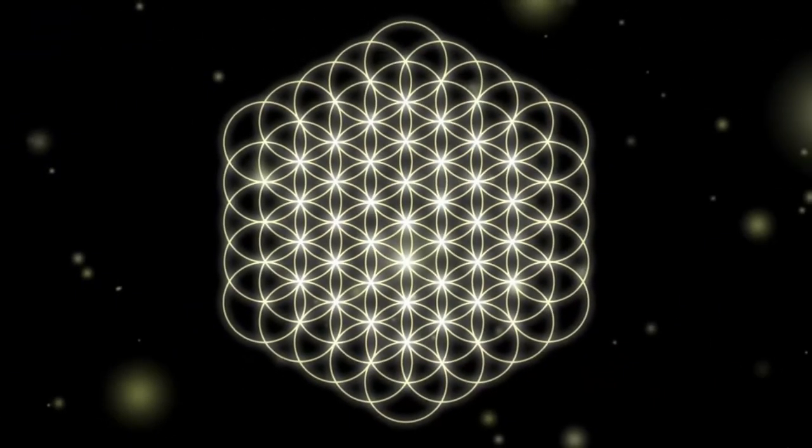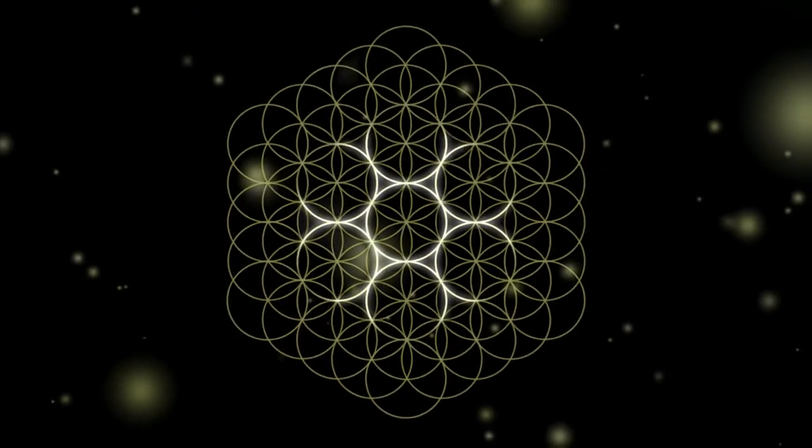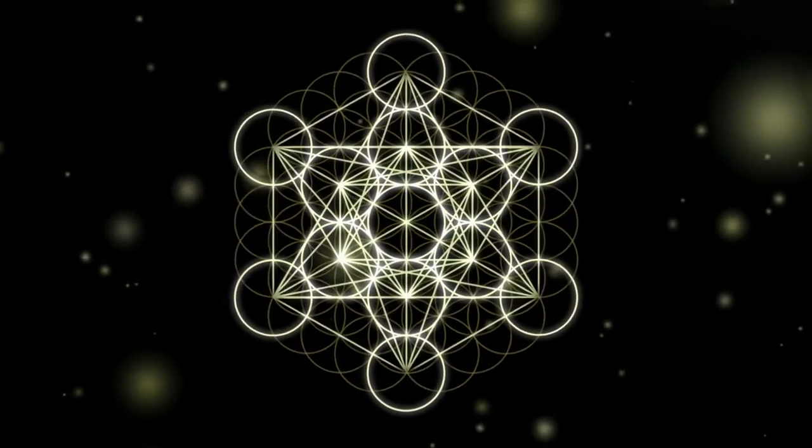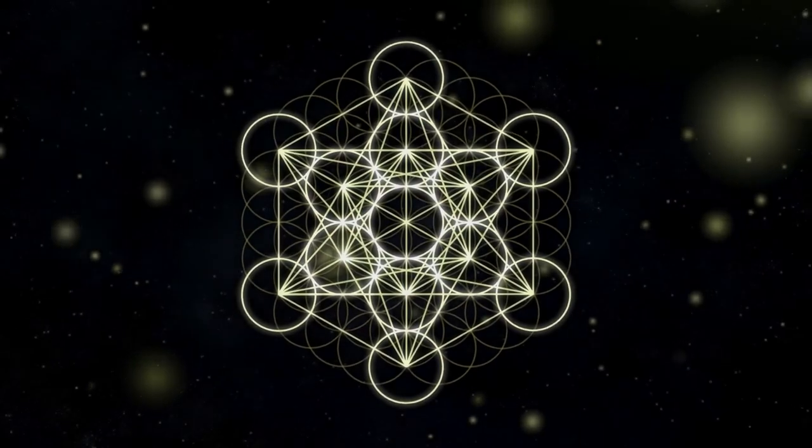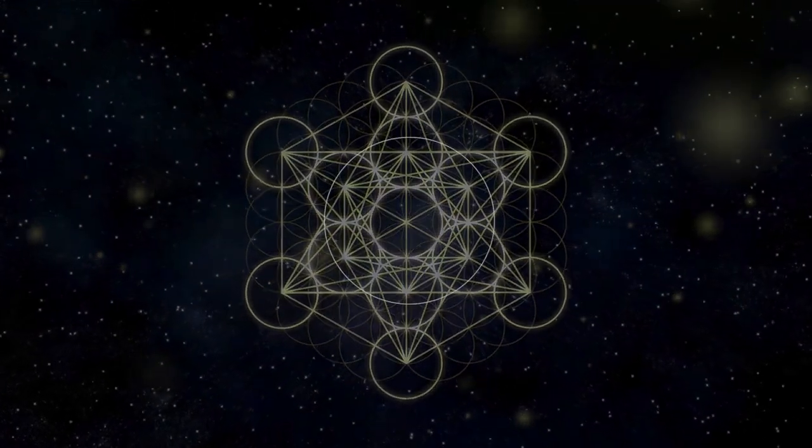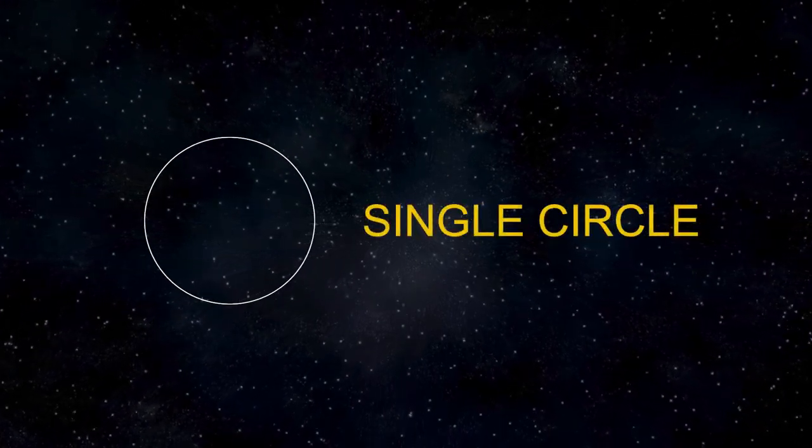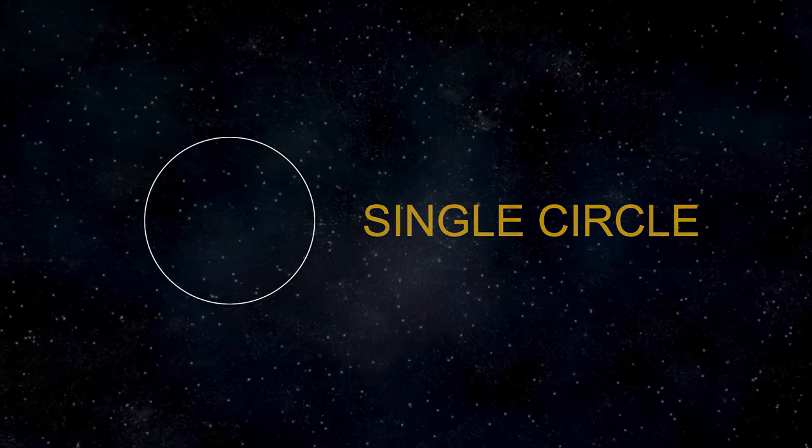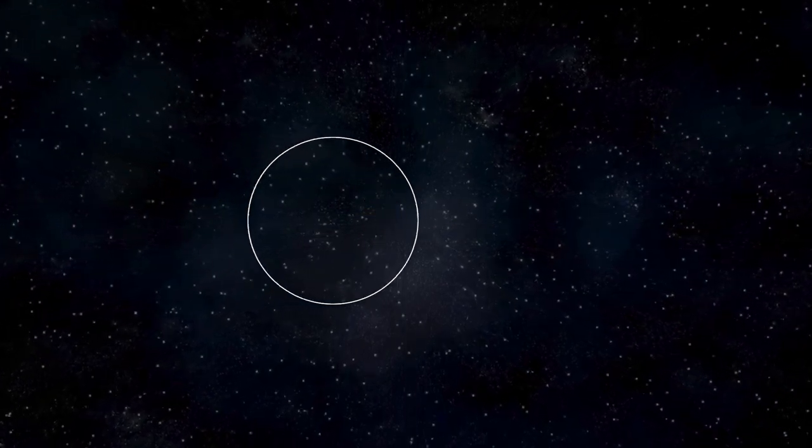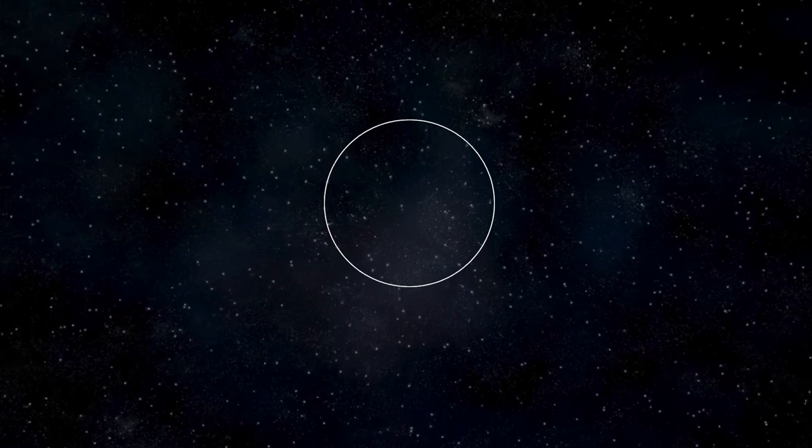If we consider sacred geometry as central to the concept of creation, it implies an unfolding process beginning with the simplest geometric shape, a single circle. This is not a scientific assertion, but rather a metaphysical or philosophical perspective. The single circle symbolizes unity and the undifferentiated. From this simplicity,